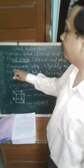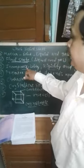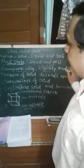Therefore solid has 3 properties: first is incompressibility, second is rigidity, and third is mechanical strength.